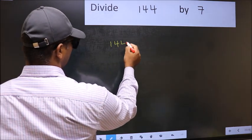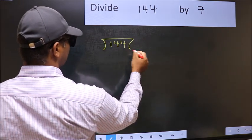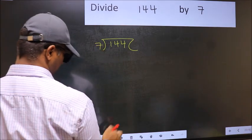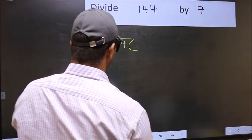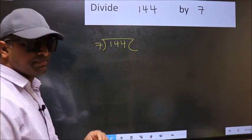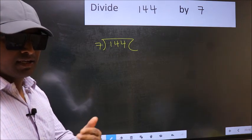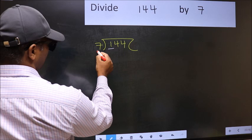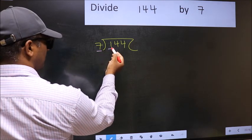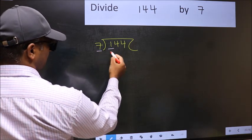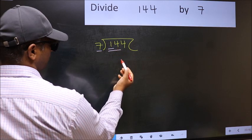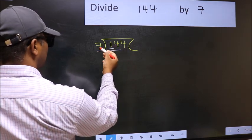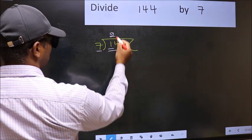144 and 7 here. This is your step 1. Next, here we have 1 and here 7. 1 is smaller than 7, so we should take two numbers, 14. When do we get 14 in 7 table? 7 twos 14.